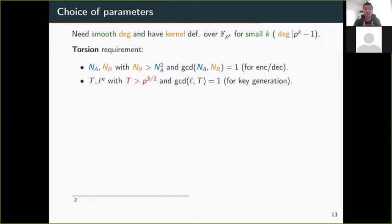In our case, here are the requirements. First, for encryption and decryption, we have degrees Na and Nb. These are the degree of the isogeny we need to compute for the trapdoor one-way function. This is the part involved in encryption and decryption. We have a bound Nb > Na², and these two degrees must be coprime.